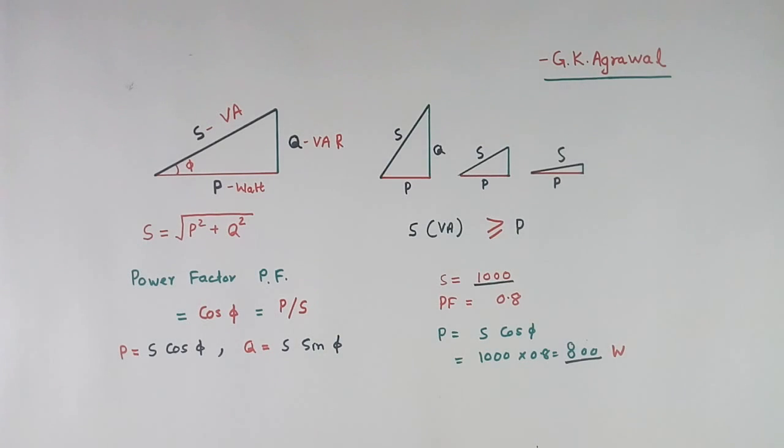Suppose we have S equal to 1000, power factor equal to 0.8. Then power will be S cos phi. S is 1000, cos phi is 0.8, it will be 800 Watt. So this power is 1000, this power P is 800. So S is more than P, or sometimes it will be equal also, provided this power factor is unity.